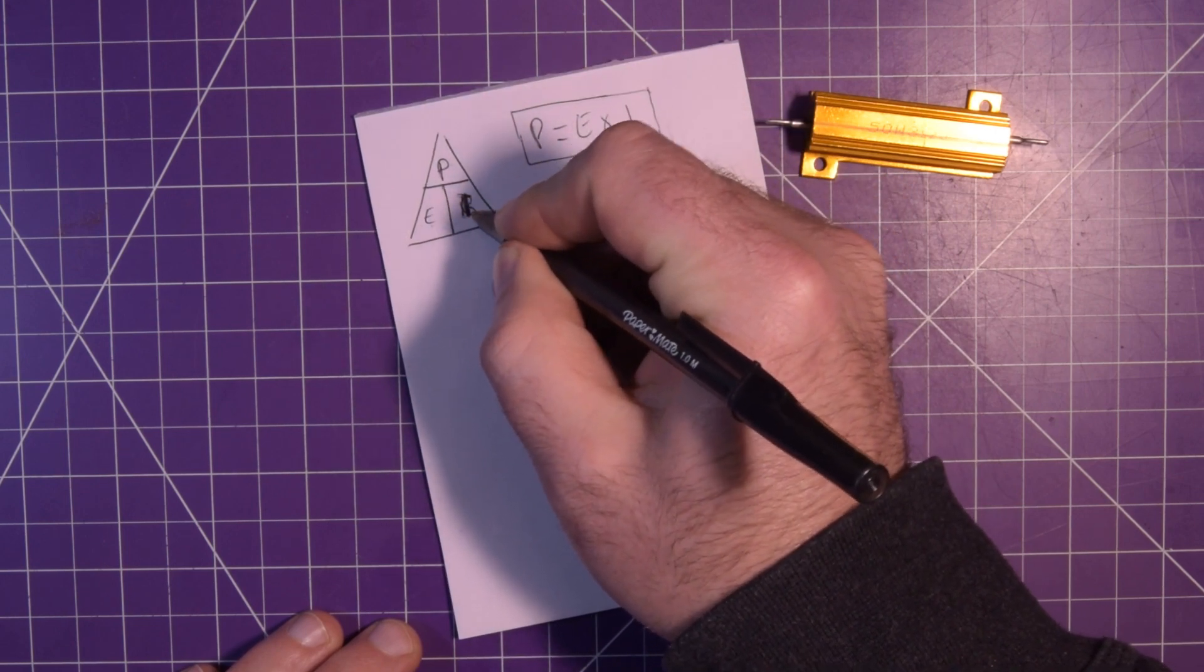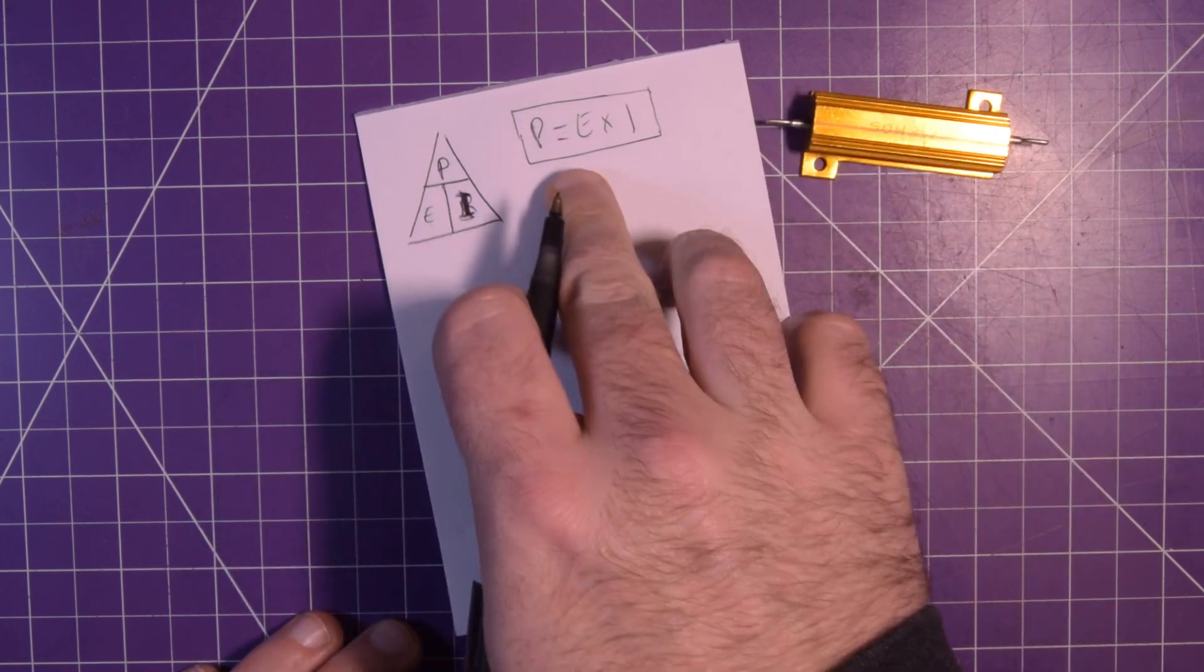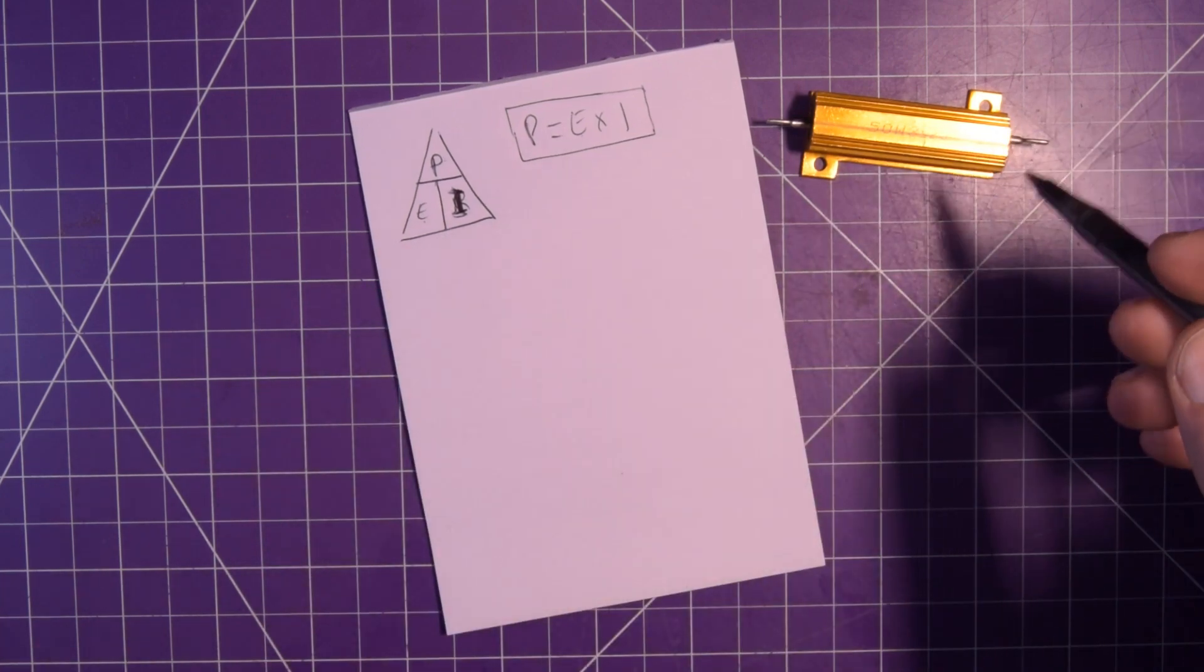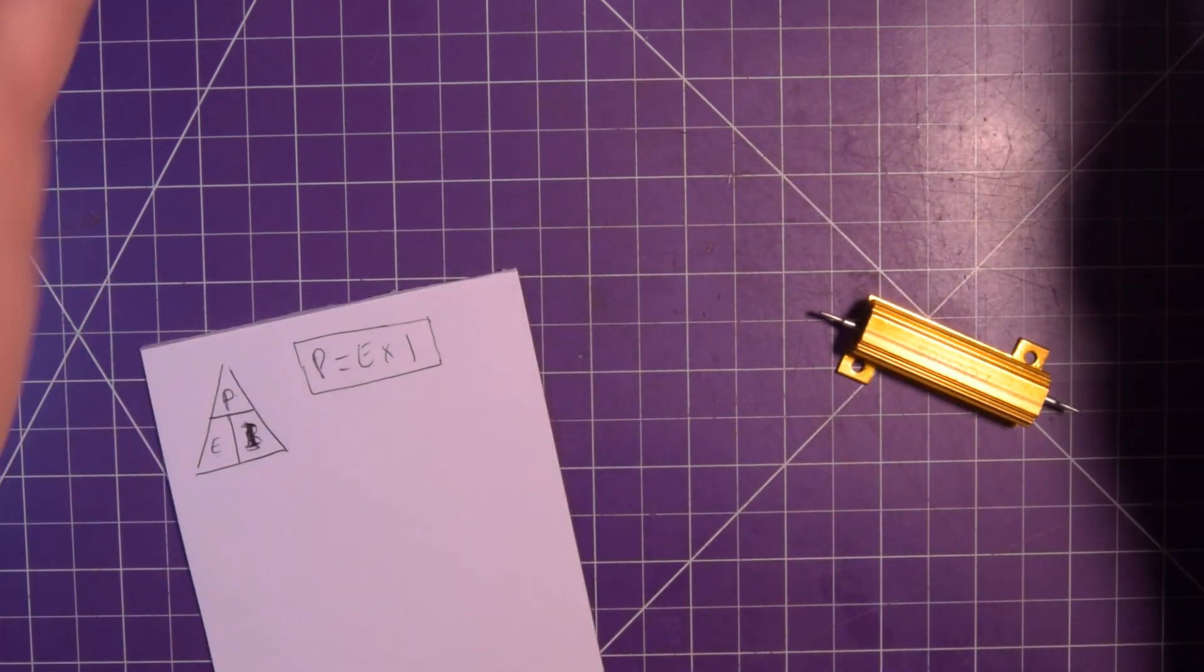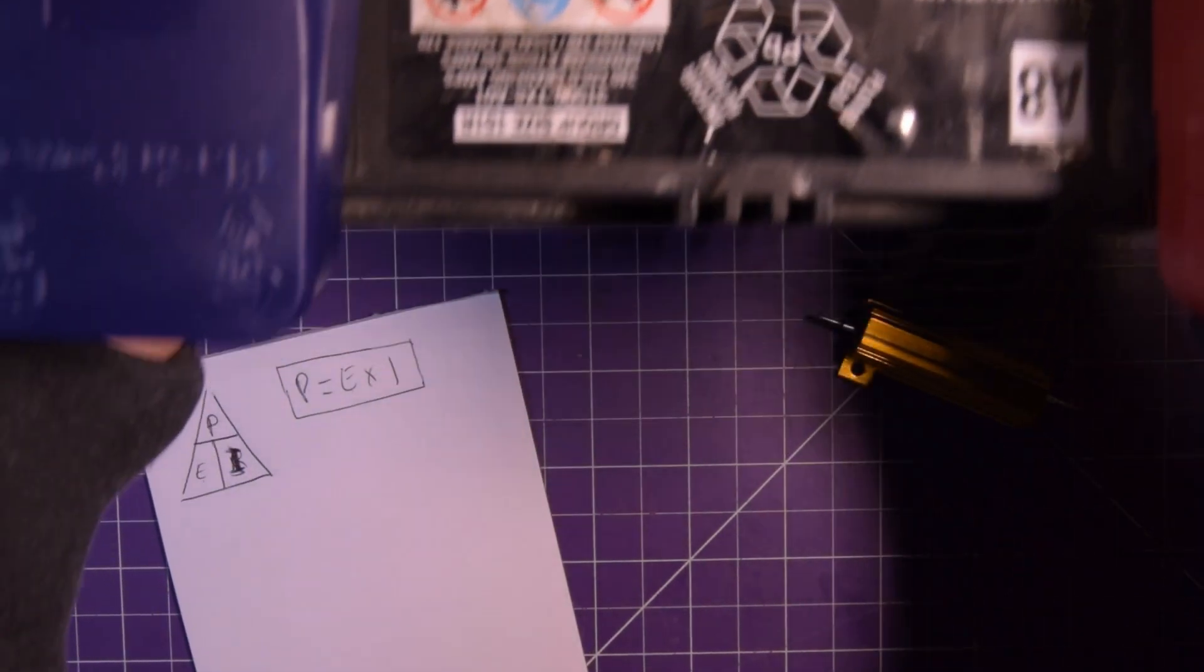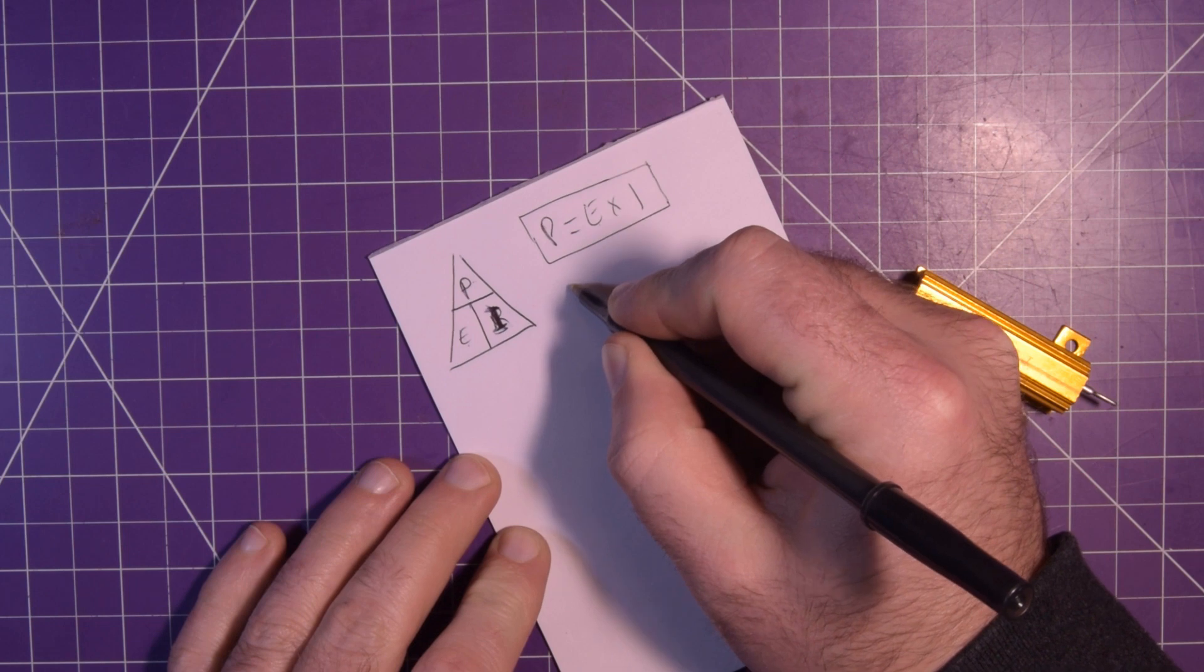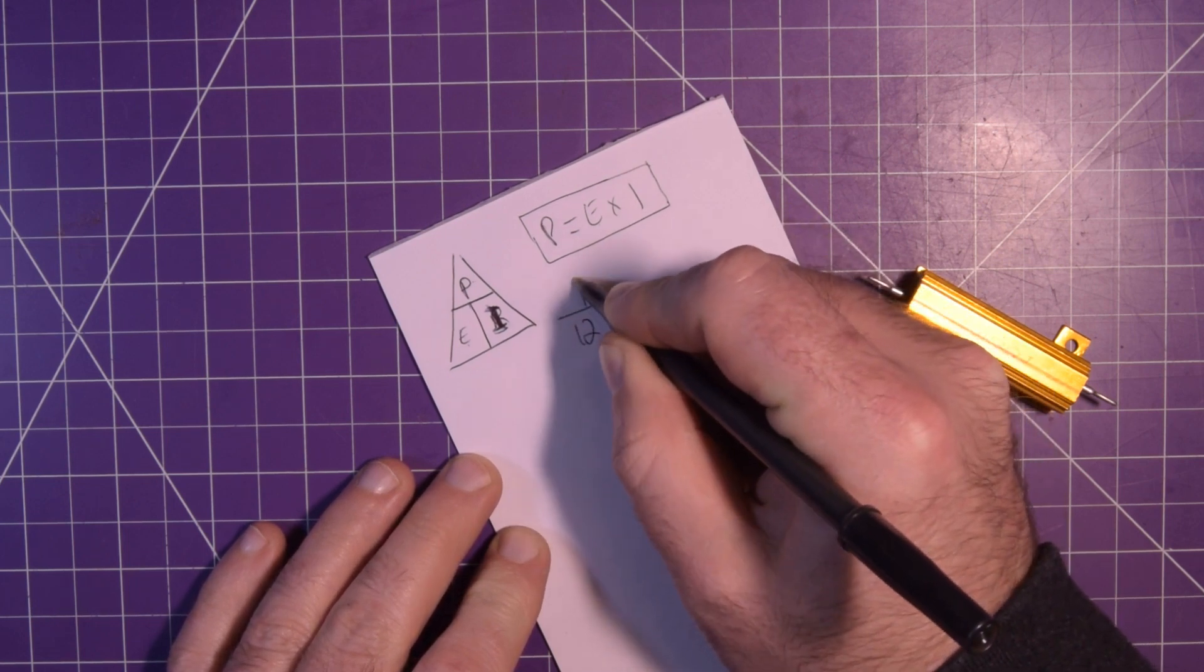Sorry, if you paused right after I put this down then I confused the heck out of you. Okay, so E times I. Basically we need to know the current. We don't have the current, we just have the resistance here. And well I have the voltage because we'll be using a 12 volt car battery.